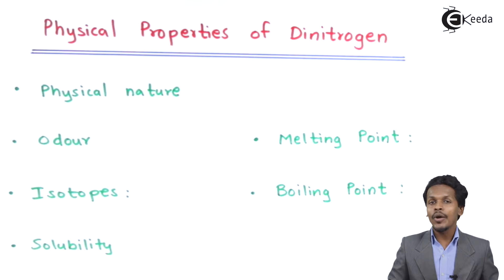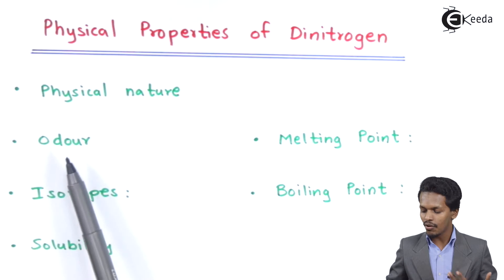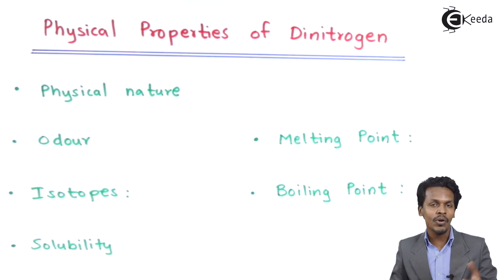So friends, in this topic we are going to talk about the physical properties of dinitrogen. Starting with the first point, that is physical nature, odor, isotopes, solubility, melting point and boiling point. So these are the points that we are going to cover here.